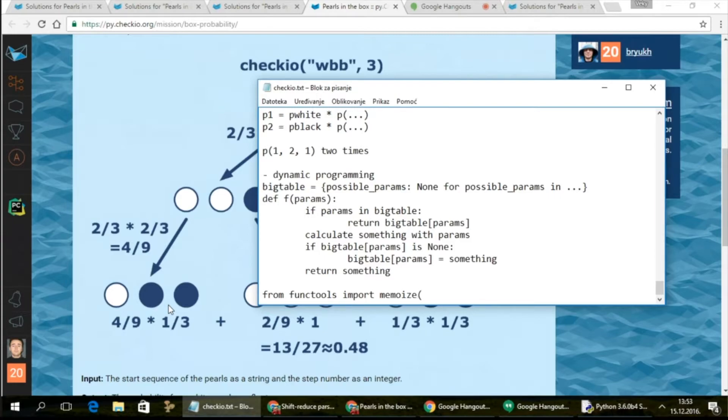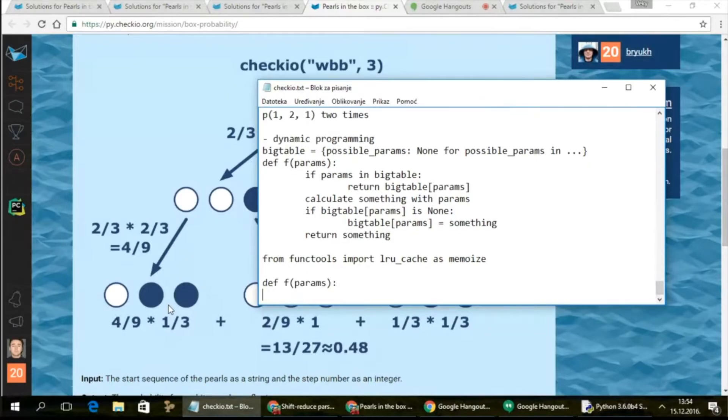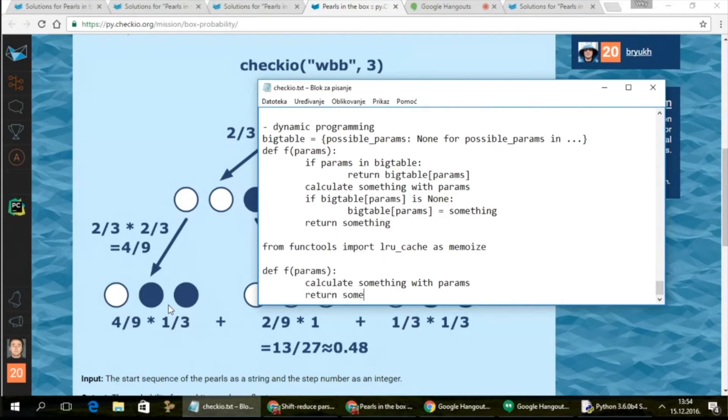Memoization is simply the accepted jargon in the programming world for this. What it is. Of course, we can rename it. Okay. So you just write your function as you intended to. So you just say calculate something with params and return something. You only do this.